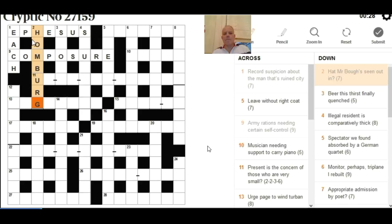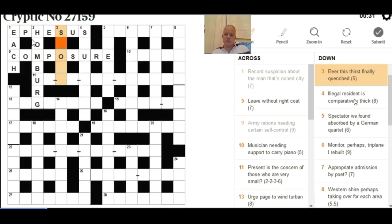Three down: 'Beer this thirst finally quenched' - I couldn't get that immediately so moved on to four down next. 'Illegal resident is comparatively thick.' These S and U are very helpful but only if your mind is liberal enough to think of a very unusual letter to go before the U. We're just looking at a double definition here - illegal resident and comparatively thick. The illegal resident is very useful because somebody living somewhere illegally is often squatting there, and SQUATTER can mean both an illegal resident and more squat than the next person, i.e. comparatively thick - not as in stupid but thick-set.